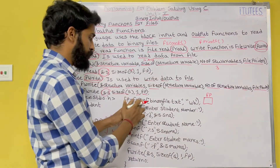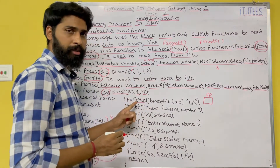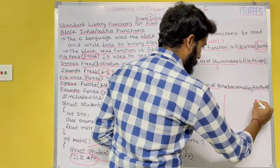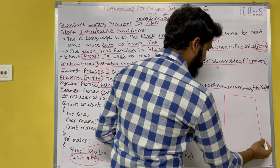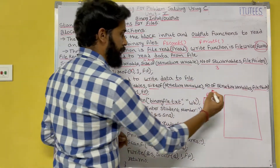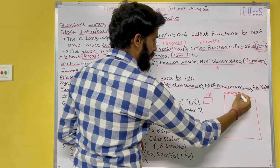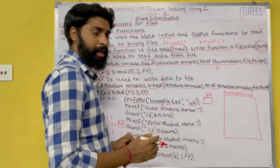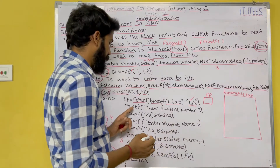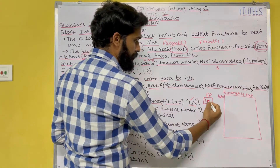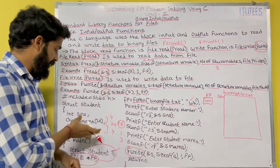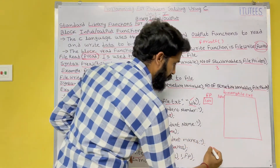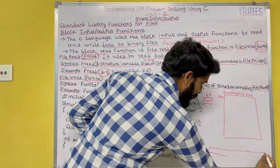Then fp = fopen("binaryfile.txt", "wb"). By using fopen, we open the file binaryfile.txt. This binary file is opened in primary memory in write binary mode (wb) and the starting address is assigned to fp, say 1010. The structure student has a size of 28 bytes — 4 bytes for the integer s_number, 20 bytes for s_name, and 4 bytes for marks.